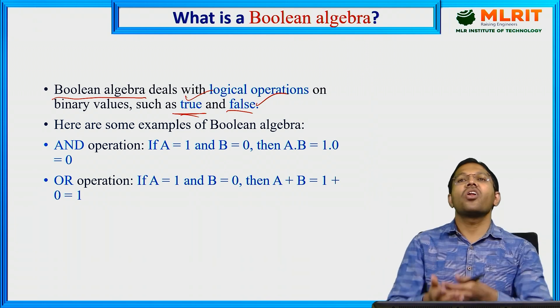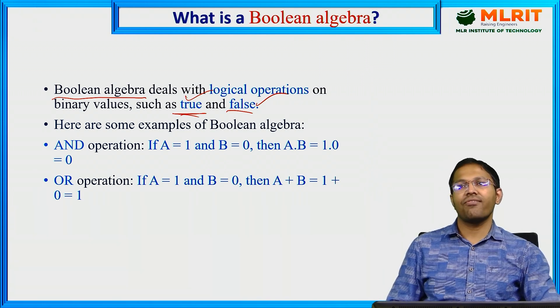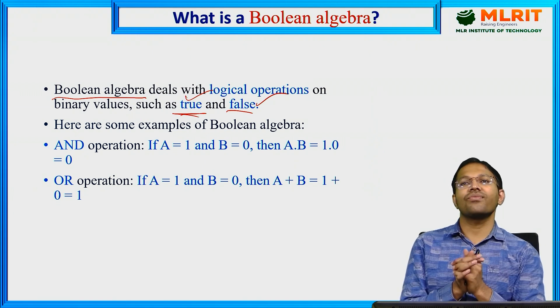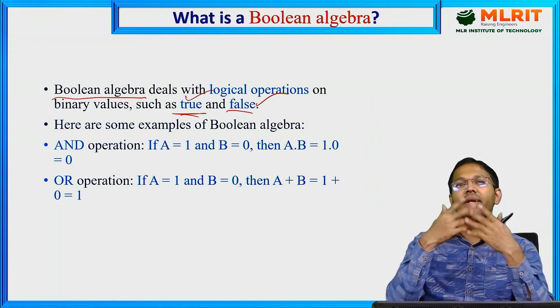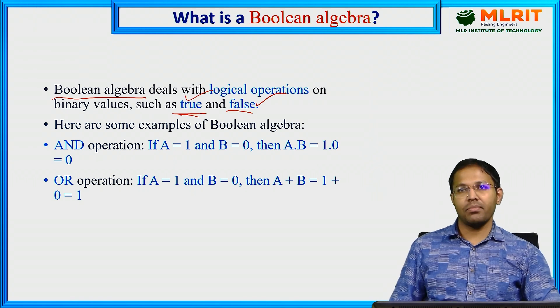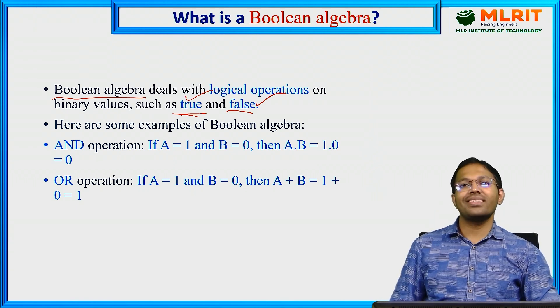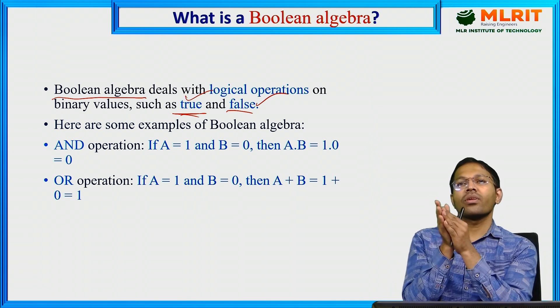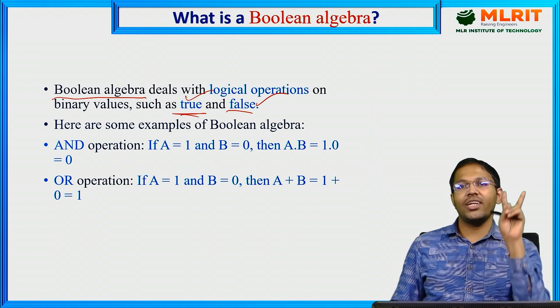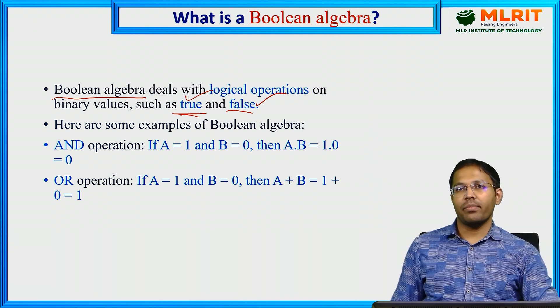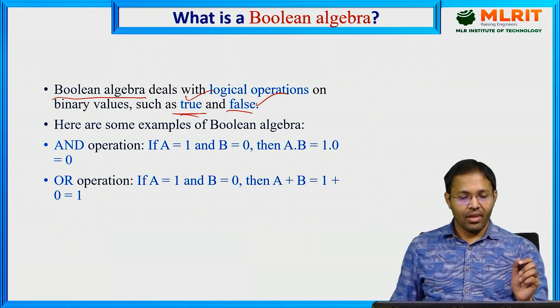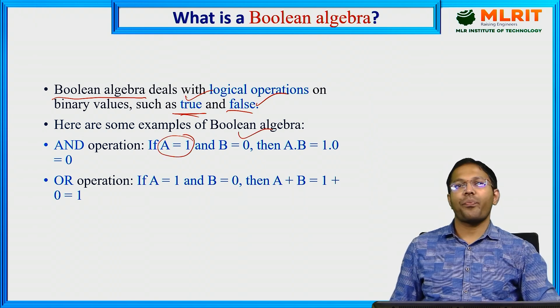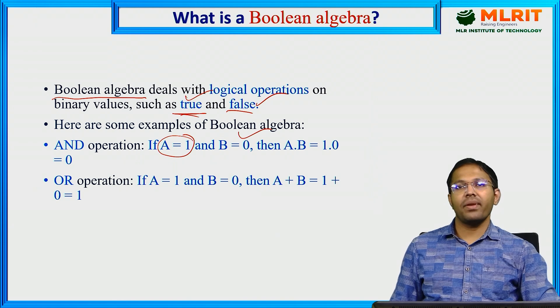We will have logical operations in Boolean Algebra, similar to mathematical operations in regular algebra. Here the variables can only take true or false. Only two possibilities a Boolean variable can take. True is represented by 1, false is represented by 0. Let us understand this with a simple example.